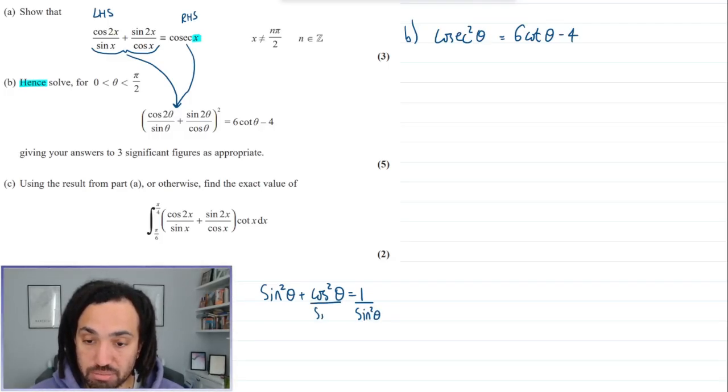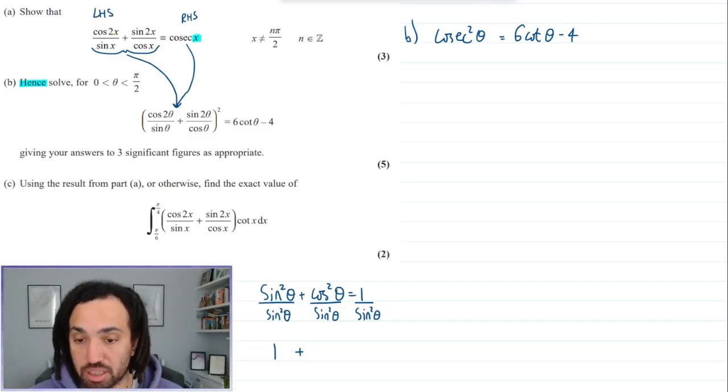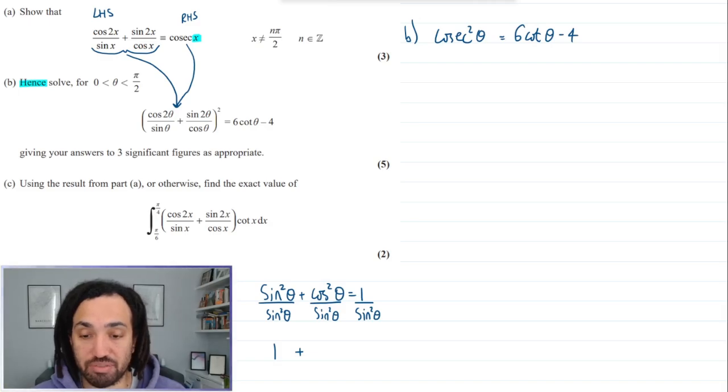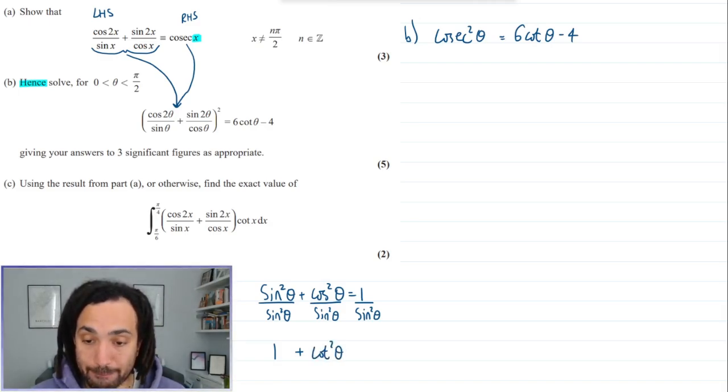And this tells us that we have 1 because sine squared over sine squared is 1. Cos squared over sine squared is the opposite of tan squared, so it's the reciprocal of tan squared, it's cot squared, and that's equal to cosec squared.